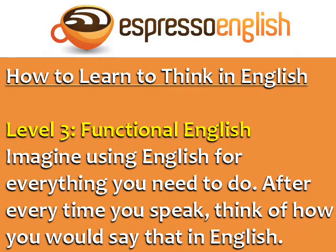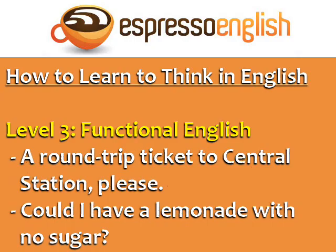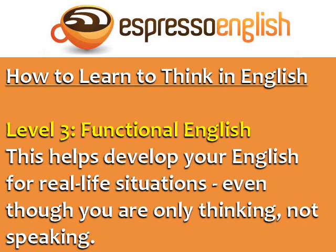Level 3 is functional English. On this level, you imagine having to use English for everything that you need to do. After every time you speak in your native language, think of how you would say that in English. For example, how would you buy a train ticket or order a drink in an English-speaking country? A round-trip ticket to Central Station, please. Could I have a lemonade with no sugar? This helps develop your English for real-life situations, even though you are only thinking and not speaking.